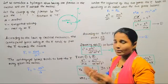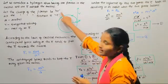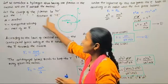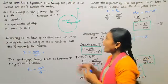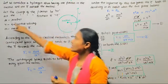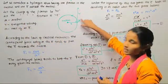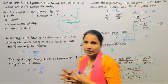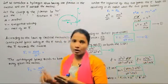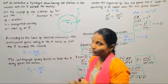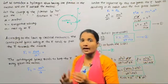Let the charge of the proton be plus E. Proton means that is a positive charge, so here the charge of the proton is indicated as plus E. And the charge of the electron is minus E. The radius is denoted as small r, phi is the tangential velocity, and M is the mass of an electron. So the terms are: plus E is the charge of the proton, minus E is the charge of the electron, r is the radius, phi is the tangential velocity, and M is the mass of an electron.